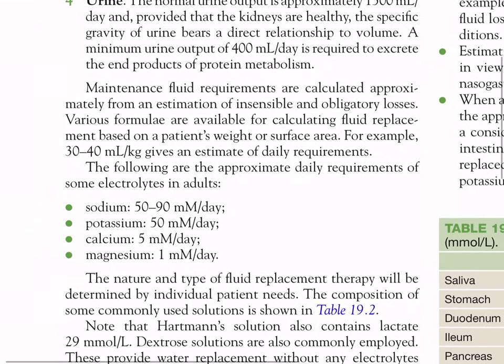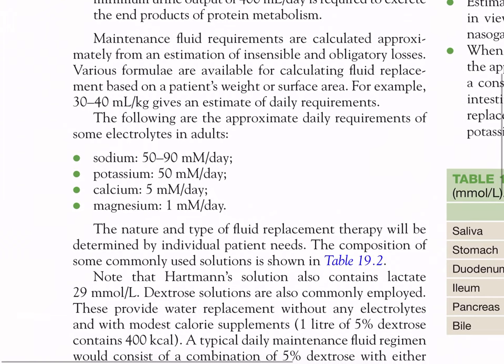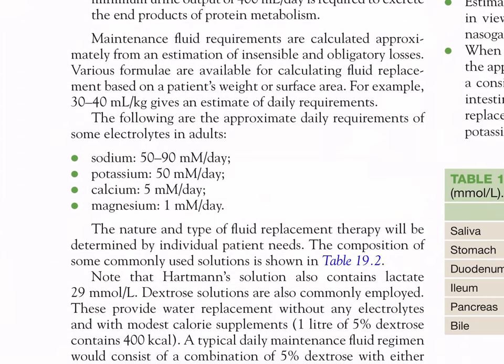Maintenance fluid requirements are calculated from an estimation of insensible and obligatory losses. Various formulae are available — for example, 30–40 ml per kg gives an estimate of daily requirements. Approximate daily electrolyte requirements in adults: sodium 50–90 mmol/day, potassium 50 mmol/day, calcium 5 mmol/day, and magnesium 1 mmol/day.